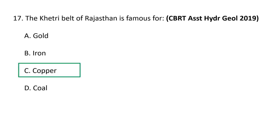Next question: the Khetri belt of Rajasthan is famous for — A) Gold, B) Iron, C) Copper, and D) Coal. Khetri is well known for copper. It is situated in the foothills of the Aravalli range, which hosts copper mineralization giving rise to an 80-kilometer-long metallogenic province from Singhana in the north to Raghunathgarh in the south, popularly known as the Khetri copper belt. C is the correct option.